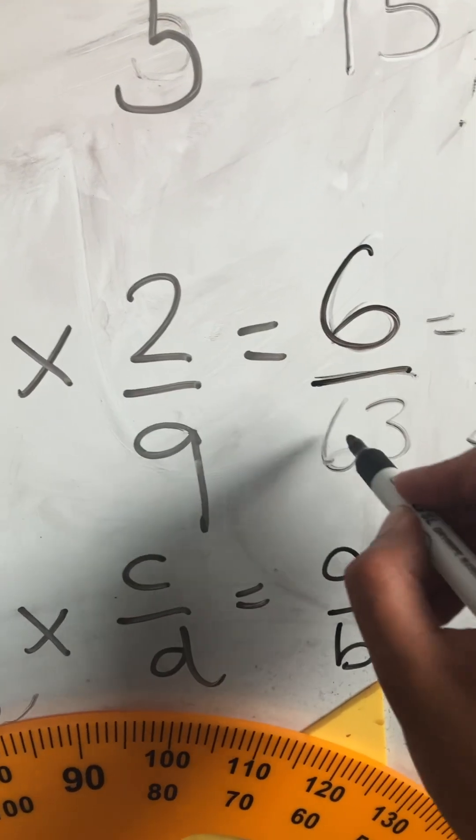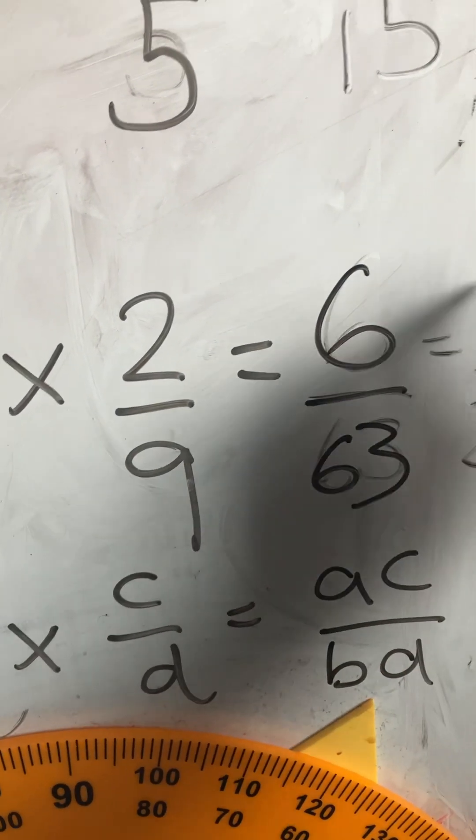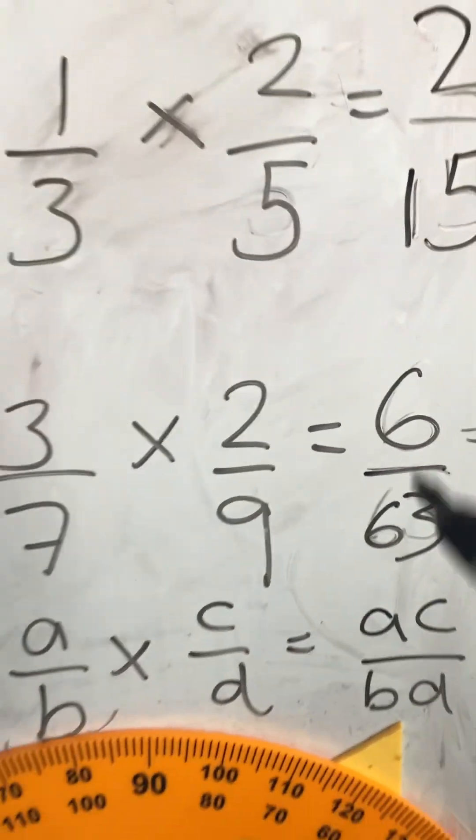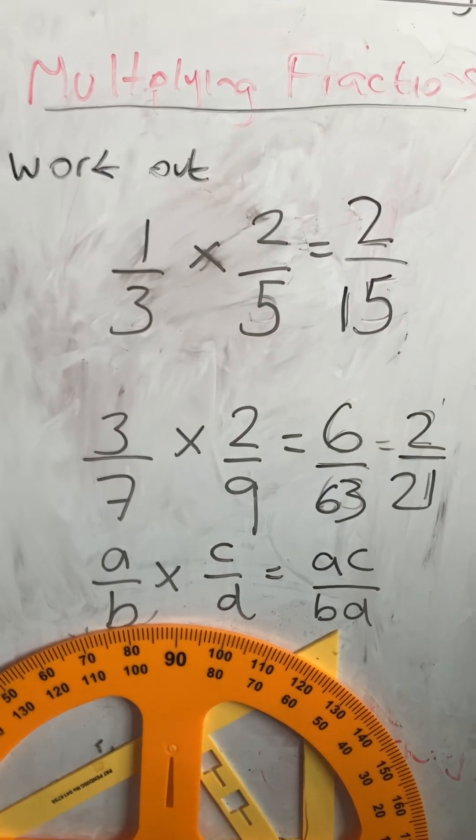It should say 6 63rds and 2 21sts. Apologies about my pens, hopefully you can forgive me.